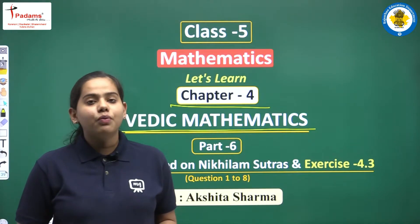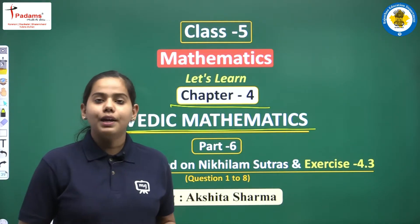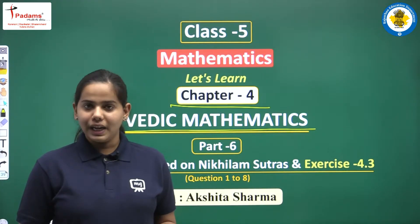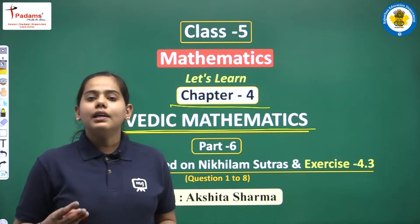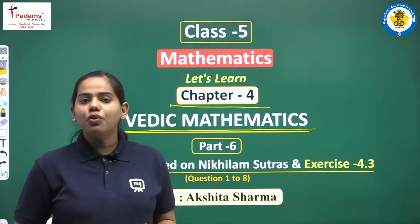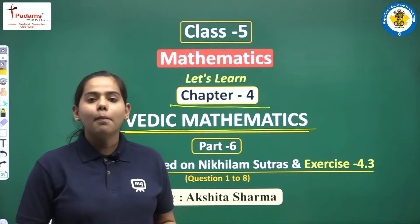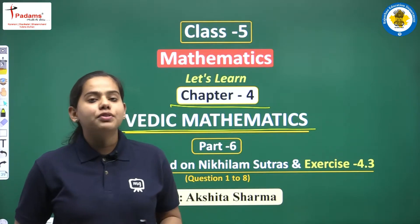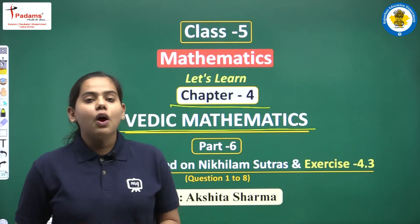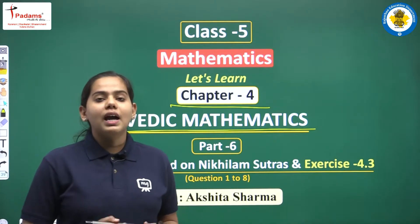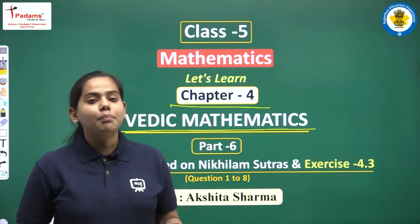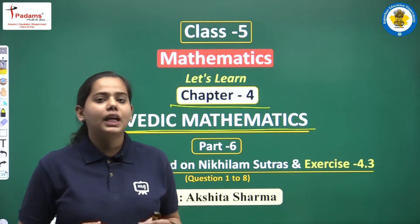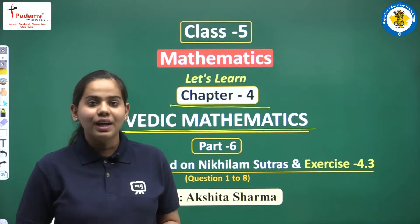The 5 concepts that we have learned and understood are Ekadiken, Ekanyunen, Ekadiken Purven, Ekanyunen Purven, and also Paramitra Ang. Using these concepts we have solved subtraction questions. Now children today we are going to learn some more concepts which we are going to apply in multiplication, division and so on.